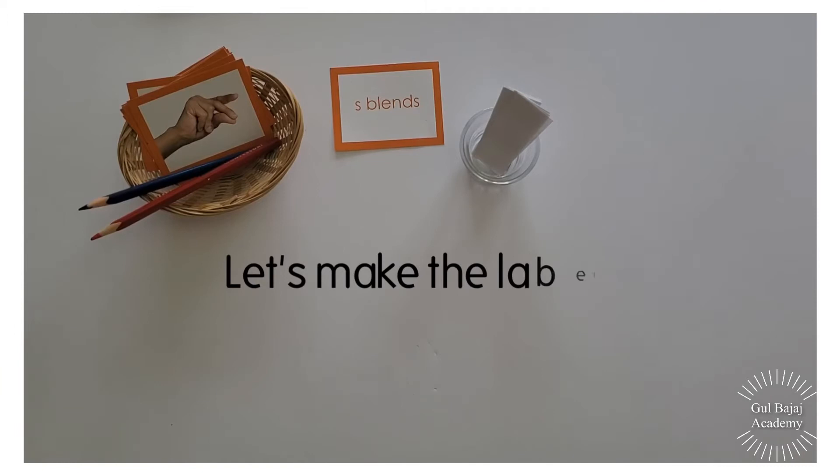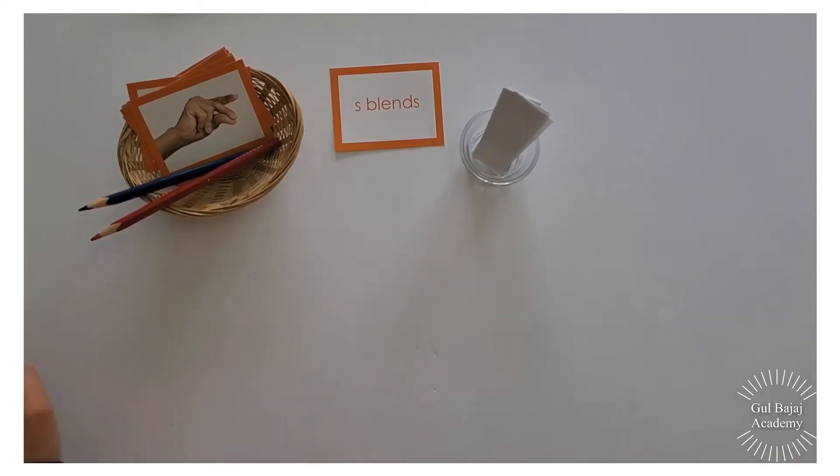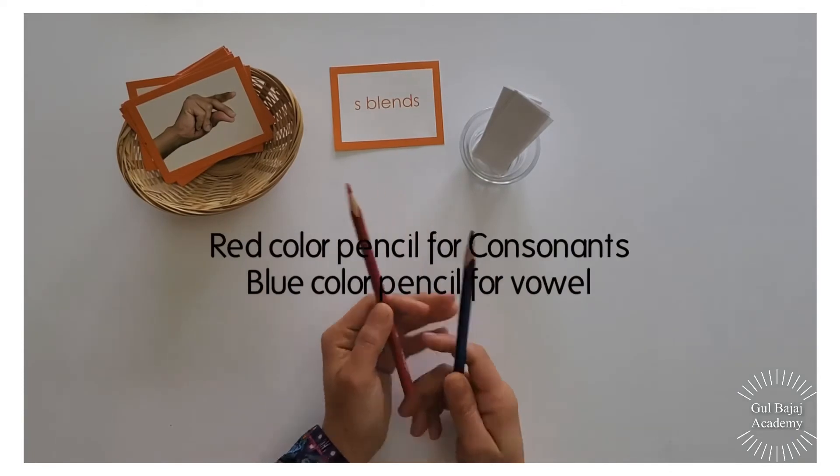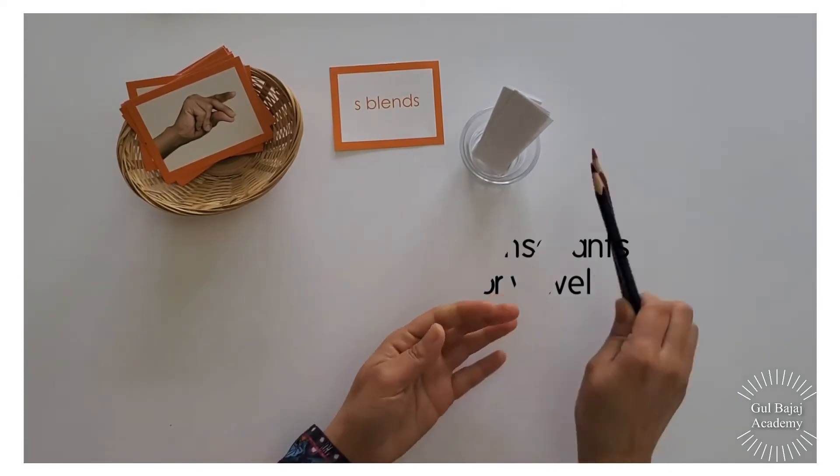Last time we used the movable letters, this time we're going to spell them and write them. I'm using two color pencils. The red is for consonants and blue is for the vowel.